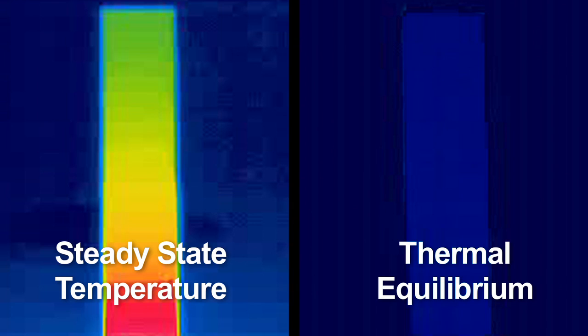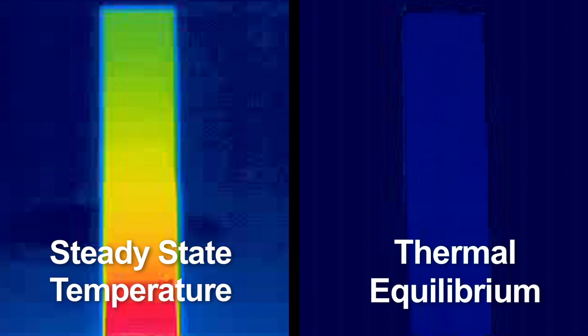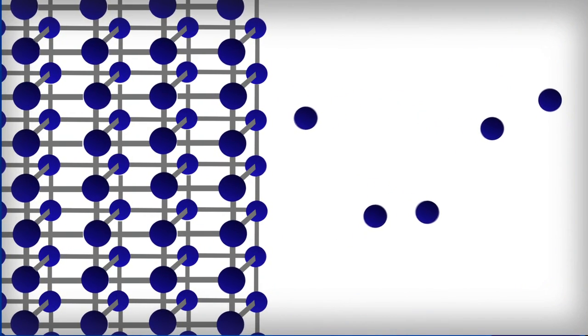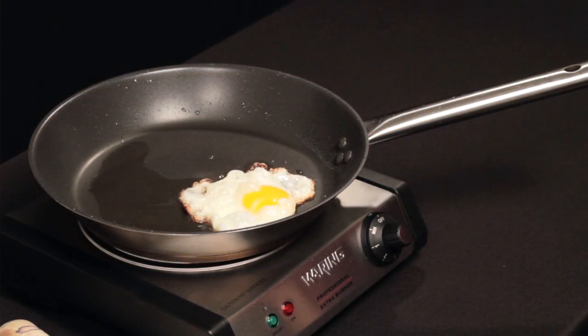You now have the tools to understand that thermal equilibrium and steady state temperature are different. If the temperatures of all parts of a system do not change with time, the system can either be at steady state or at thermal equilibrium. If the net heat flow is constant and non-zero, as for our metal bar on the heater, the system will have a steady temperature profile. If it is constant and zero, as for our metal bar at room temperature, the system is at thermal equilibrium. So equilibrium is just a special case of steady state. We were able to apply our understanding of thermal equilibrium and steady state temperature to describe the temperature profile of a pan left on the stove for a long time, and to understand the design elements that led to that profile.